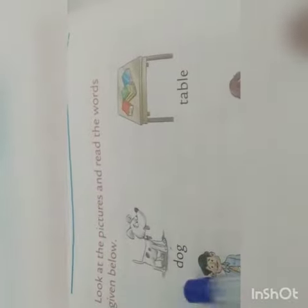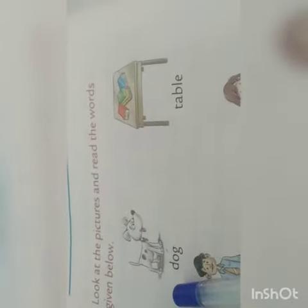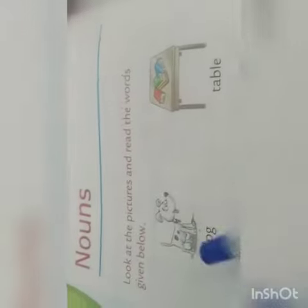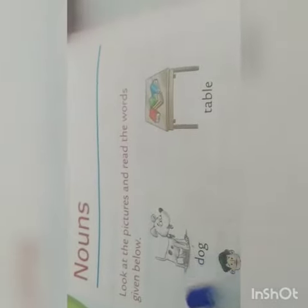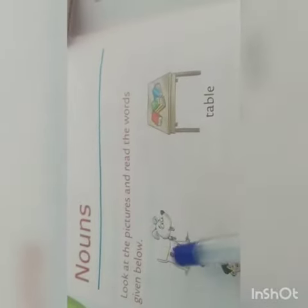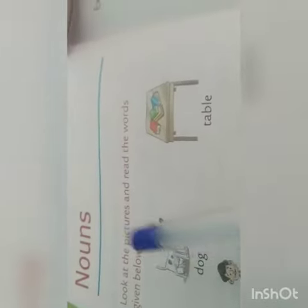Agar meinne animal ki baat karun, to animal mein aata hai dog, cat, kangaroo, monkey, donkey, cow, buffalo. Yeh animal ke naam ho jaate hain.